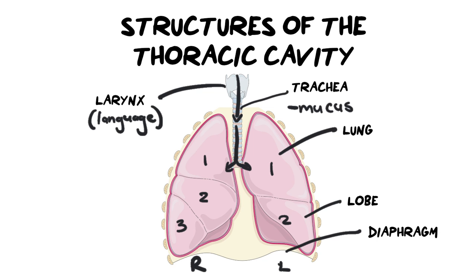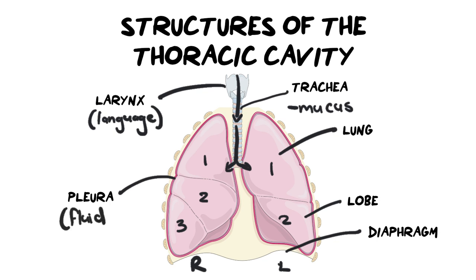Protecting the lungs, there are two things to be aware of. First is the pleura or pleural membrane — the faint pink lining on the outside — which secretes a fluid to prevent friction. The lungs are moving every single day, so we don't want friction to deteriorate the lung tissue. The pleural fluid acts as lubrication inside these membrane bags surrounding the lungs.